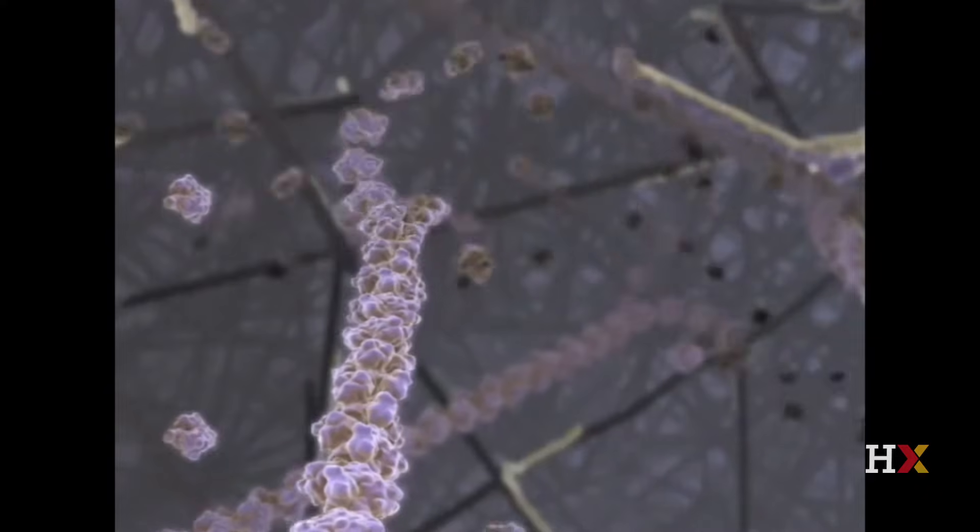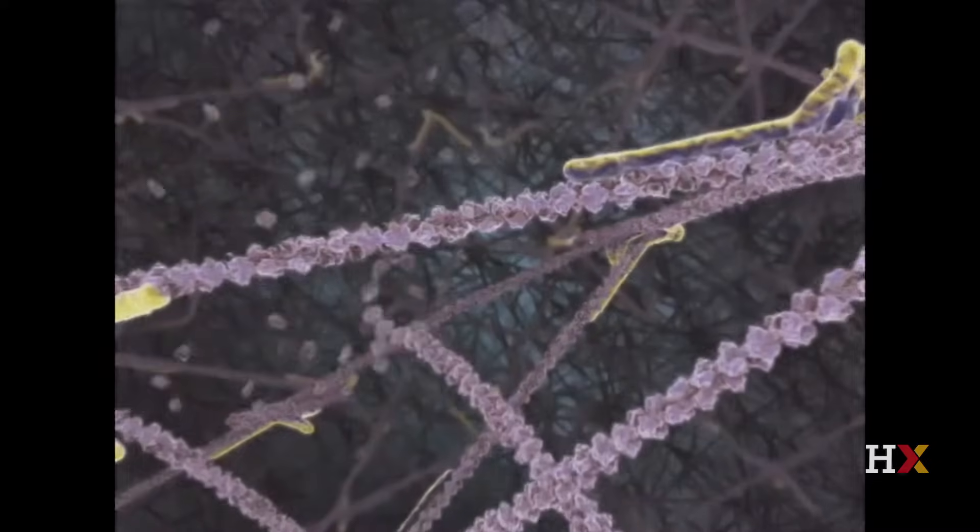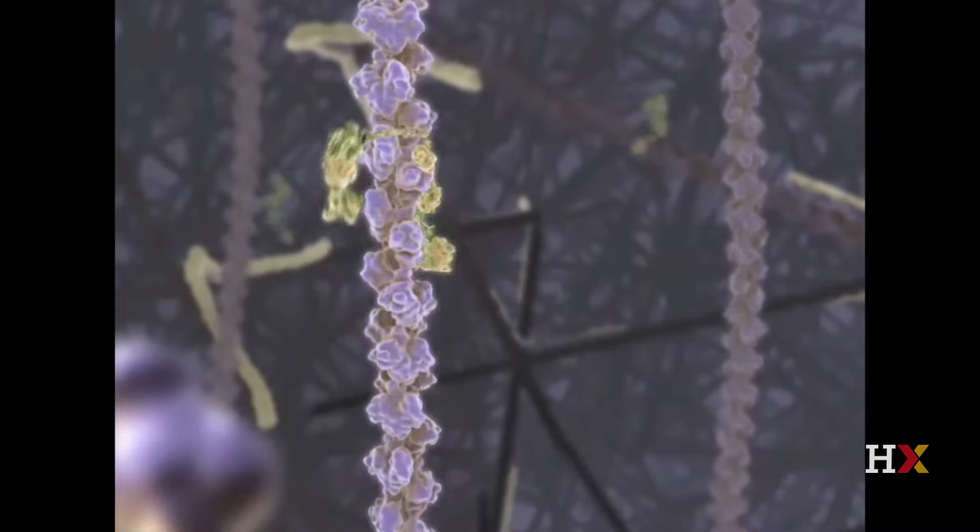They assemble, and in this case we're looking at an actin filament or several cycling, but they can also disassemble when other proteins sever those structural elements.